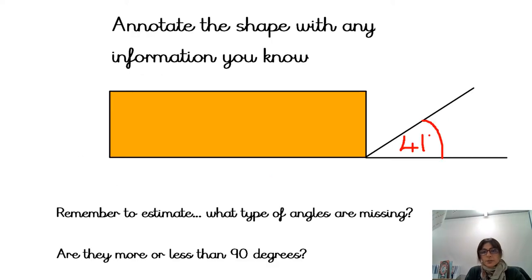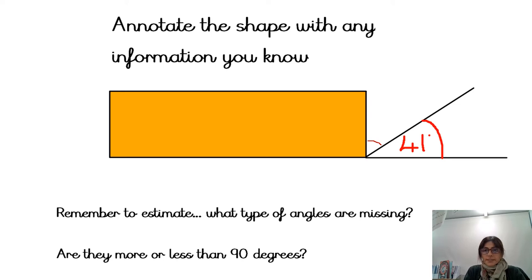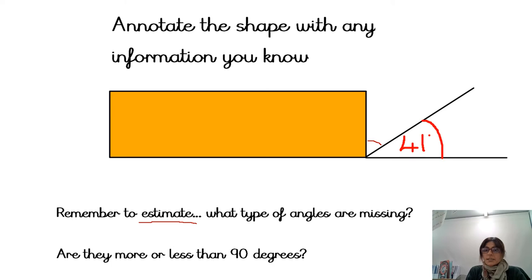Let's have a look at this shape. I'd like you to annotate as many of the angles as you possibly can and to find out this missing angle here. Pause the video and then play when you are ready. When you find your answer, think: is it a sensible answer? First of all, have an estimate — what do you think this angle is going to be? Think about whether it's less than or more than 90 degrees.